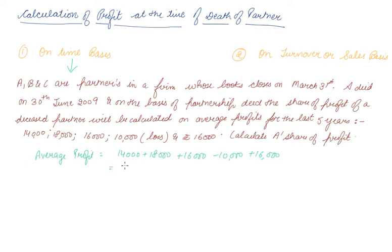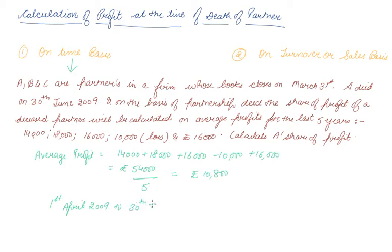The total comes out to be rupees 54,000. To calculate average profit, divide by the number of years, which is five, giving rupees 10,800. This 10,800 is the average profit for a full year, but we have to calculate it from 1st April 2009 to 30th June 2009, which is three months. So it will be 10,800 × 3/12, which equals rupees 2,700.